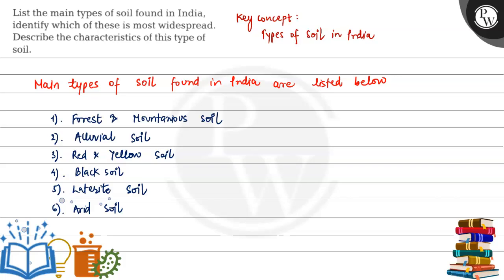Hello Batsho, let's see this question. This question says: list the main types of soil found in India and identify which of these is most widespread. Describe the characteristics of this type of soil. So the key concept of the question is types of soil in India.